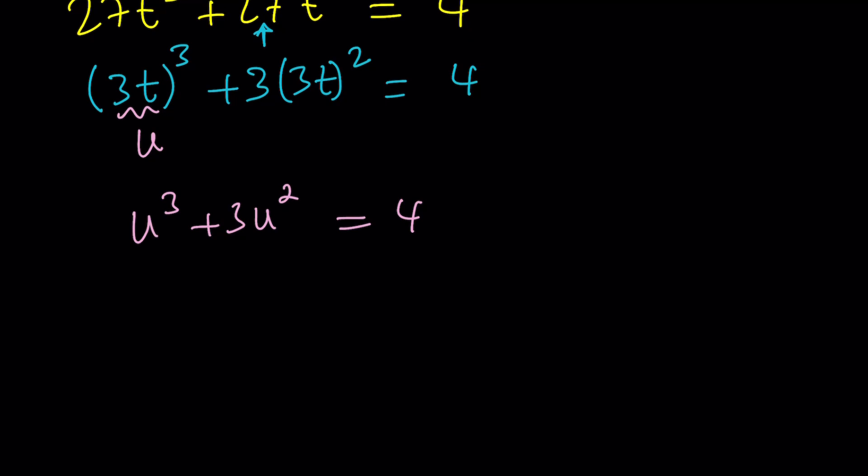4 is a constant, just stays like that. Now we can go ahead and call this something, right? And I don't know, let's just call it u. u cubed plus 3u squared equals 4. What does this equation tell you? Tell me what this equation is telling you. If you say u equals 1, you're right, because 1 plus 3 is equal to 4.